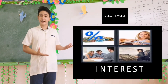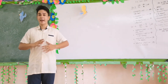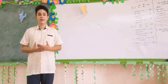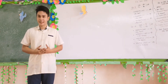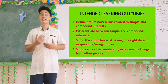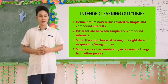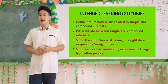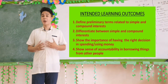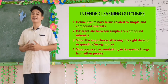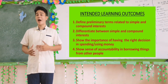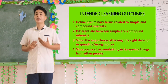Interest is our lesson for today. Before we talk more about interest, let me discuss our intended learning outcomes for this lesson. First, define preliminary-related terms to simple and compound interest. Second, differentiate between simple and compound interest. Third, show the importance of having the right decision in spending or using money. And lastly, show accountability in borrowing things from other people.